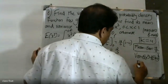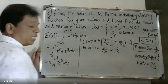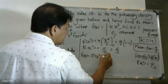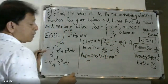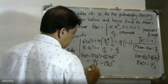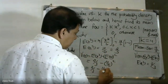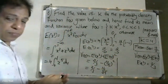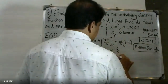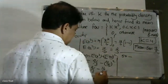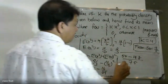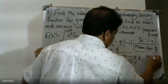So expectation of x squared is equal to four by six, which simplifies to two by three. Therefore variance equals two by three minus four by five squared, which gives two by three minus sixteen by twenty-five. Working this out, the variance of x is equal to two by seventy-five. The standard deviation is the square root of the variance.